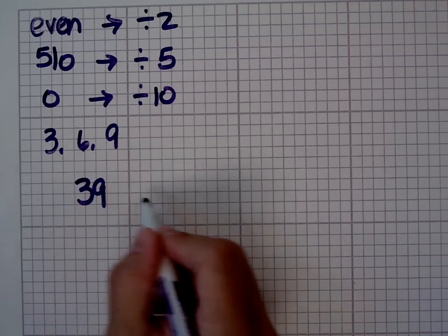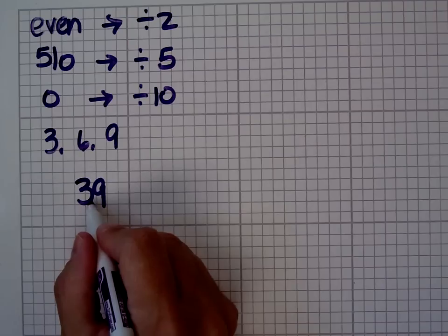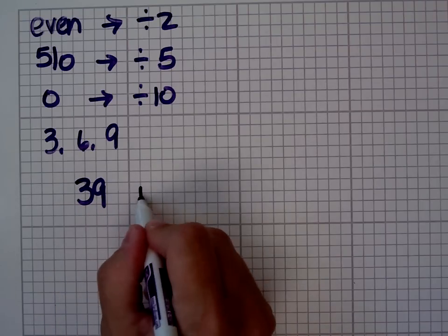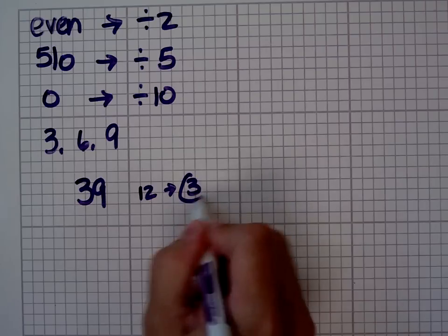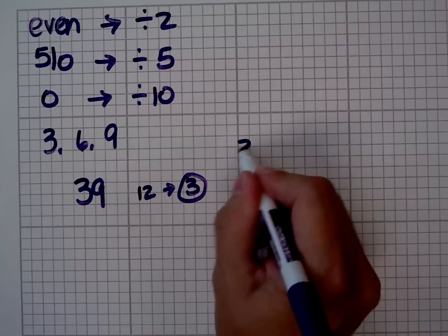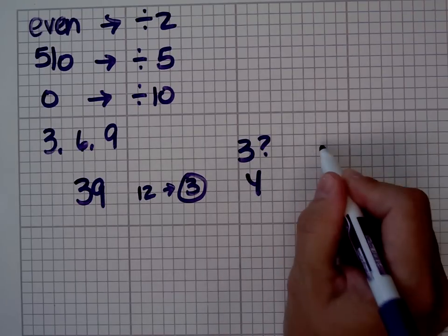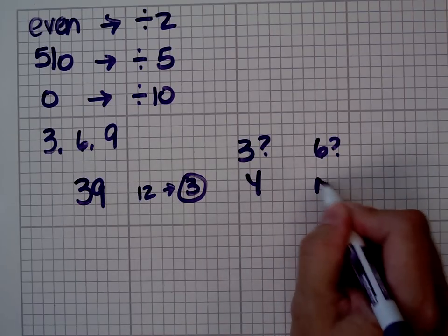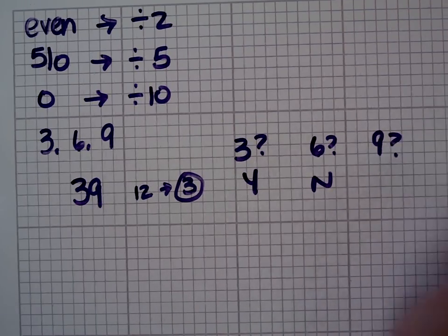Let's start with the number 39. 39 has a digital root. 3 plus 9 is 12. 1 plus 2 is 3. It has a digital root of 3. Is this number divisible by 3? Yes. Is it divisible by 6? No. Is it divisible by 9? No.